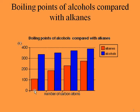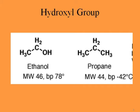As you can see, alcohols have much higher boiling points compared to alkanes with the same number of carbon atoms. The boiling points of alcohols also increase as the number of carbon atoms increases — from methanol to butanol you can see it is increasing.